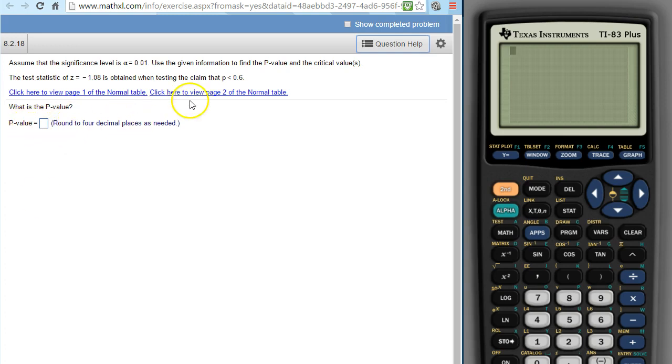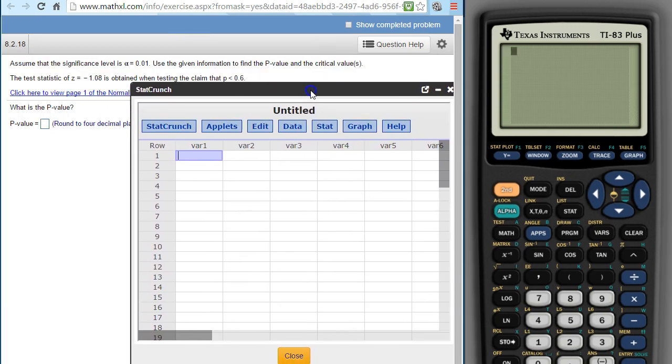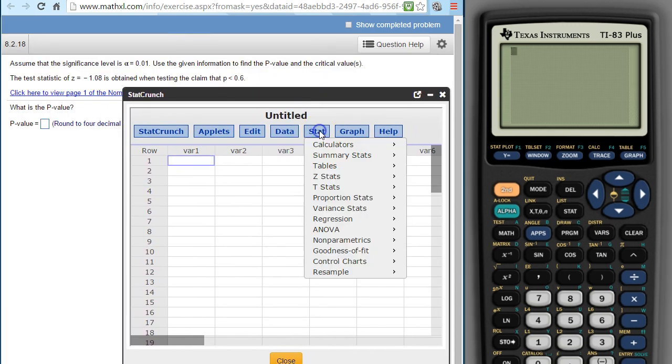All right, let's say I want to find a p-value using StatCrunch when I have a test statistic. So if I click StatCrunch, I'm going to move this down here, and what I need to go to is Stat.